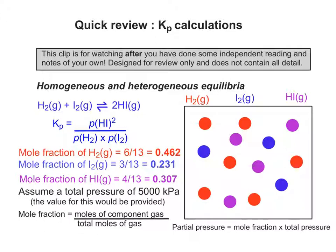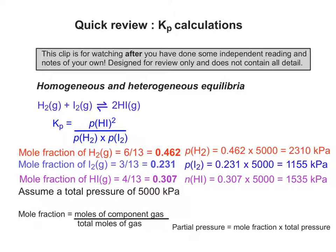if we now assume a total pressure of 5,000 kilopascals, we can do each gas in turn. So multiplying the mole fractions by the total pressure, I get the three individual partial pressures.